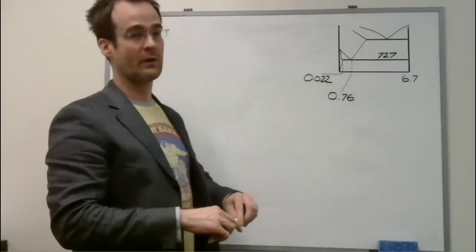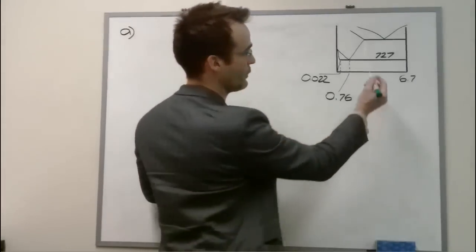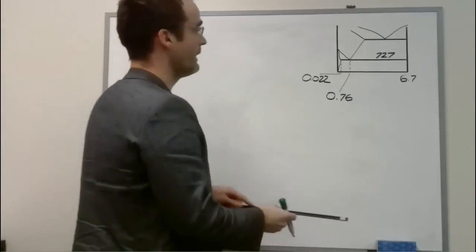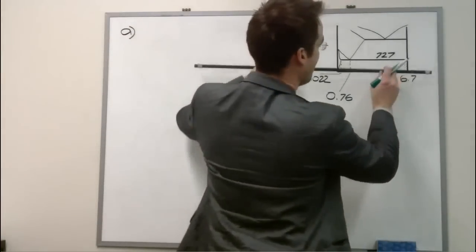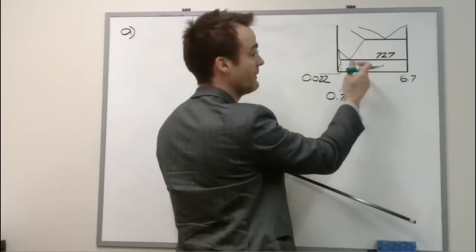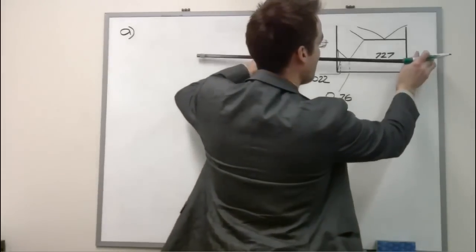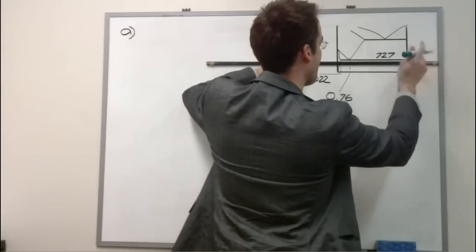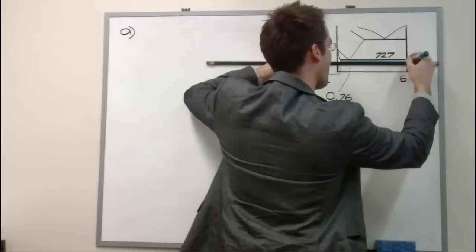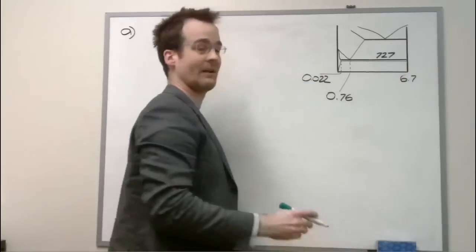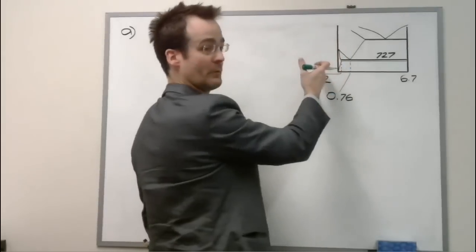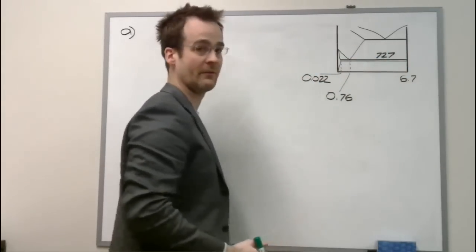So in this case, the question tells us 725 degrees. So we know we're below 727. It doesn't tell us the composition yet, but if we're below 727, we're in the two-phase alpha plus cementite region, and we're going to draw a tie line. Again, as soon as we realize we're in the two-phase region, we draw a tie line. It confirms that we've got ferrite and cementite.